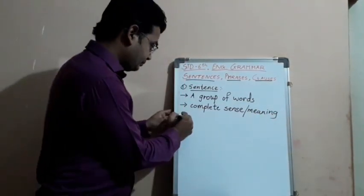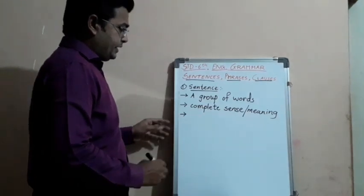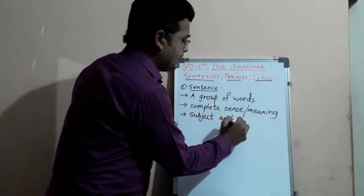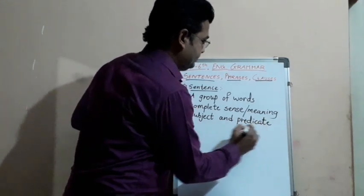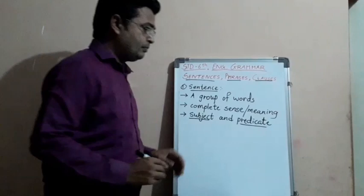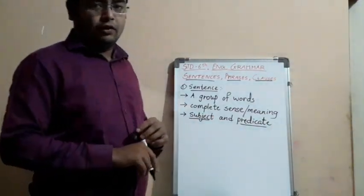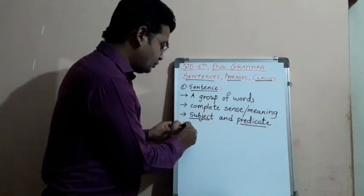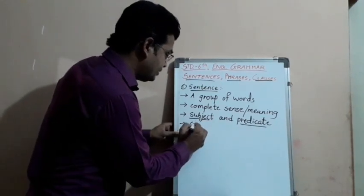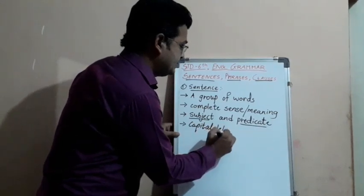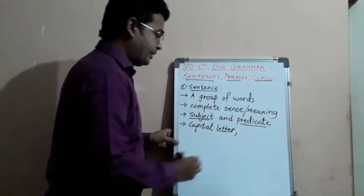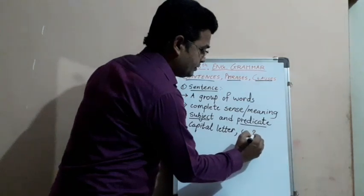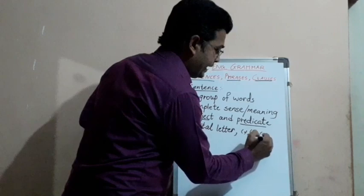As I told you, a sentence has its own subject and predicate. You might have known about this — if you have not, I will explain. A sentence starts with a capital letter. Generally, in affirmative sentences, it ends with a full stop. It ends with a question mark for questions, and an exclamation mark for showing sudden feeling.